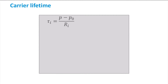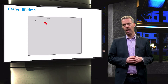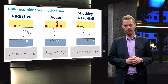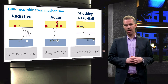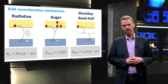First, we need to understand how the carrier lifetime is related to the different recombination mechanisms. As a reminder, the lifetime of a specific recombination mechanism is calculated by dividing the excess minority carrier concentration by the recombination rate Ri. Let us consider again the recombination mechanisms that may act in the bulk of the semiconductor. For the semiconductor bulk, we have identified three different mechanisms: radiative recombination, Auger recombination, and Shockley-Reed-Hall or SRH recombination.